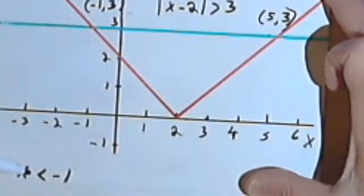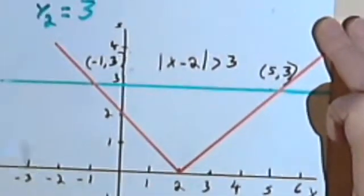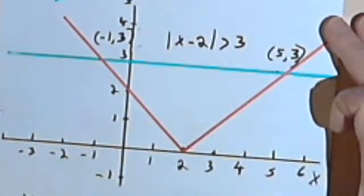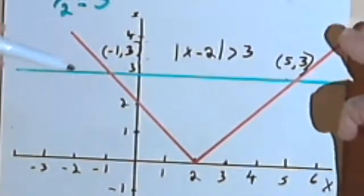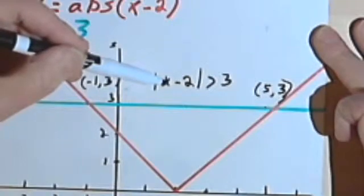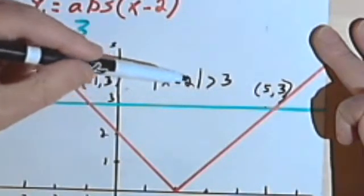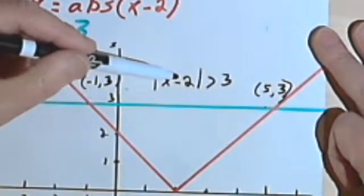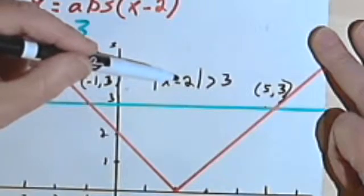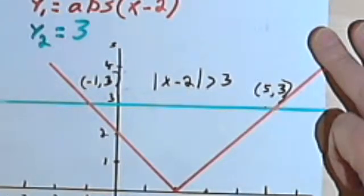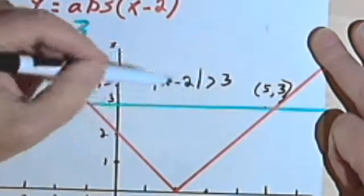Let's pick a number less than negative 1 and make sure that works. So what if I say x equals negative 7? If I go back to the original equation, I'm going to have the absolute value of negative 7 minus 2 is greater than 3. Well, negative 7 minus 2 is negative 9, but the absolute value of negative 9 is 9, and 9 is definitely greater than 3. So any number that's less than negative 1 — negative 2, negative 3, negative 4, all the way to negative infinity — is going to work in this inequality.